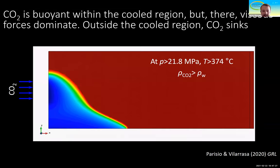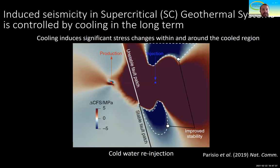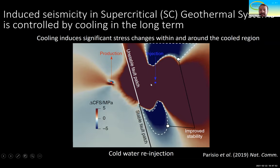This is a new concept proposed very recently, and there are some risks to explore yet. One is the effect of cooling, because at these depths the magnitude of cooling will be larger than in deep saline aquifers. Here I show an example from a simulation of an enhanced geothermal system in supercritical conditions in a deep volcanic area.